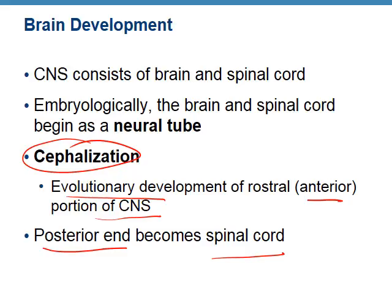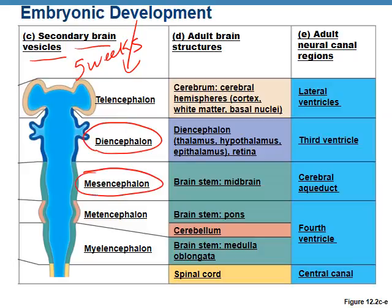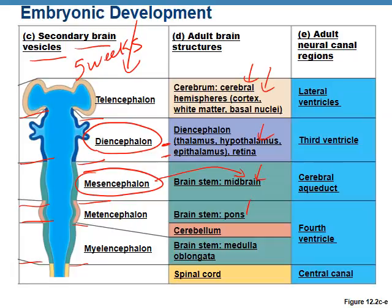The next slide shows secondary brain vesicle development at about five weeks. The reason I'm covering this is because you might see these terms. You'll see diencephalon — that is the thalamus, the hypothalamus, and the epithalamus. And then sometimes you'll see the word mesoencephalon, and that specifically has to do with the midbrain. Basically, we're dividing this five-week embryo into sections that are going to differentiate into all of these regions of the brain.